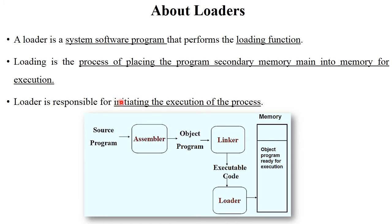The loader is responsible for initiating the execution of the process. In this diagram, the structure and working of the loader is shown. First, the source program goes to the assembler, which translates it into an object program. Next, the linker links additional frameworks and libraries to the object program. Then the overall executable code is sent to the loader, which places it into main memory for execution.